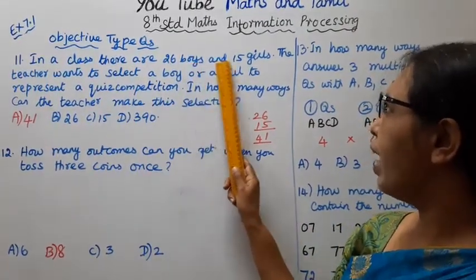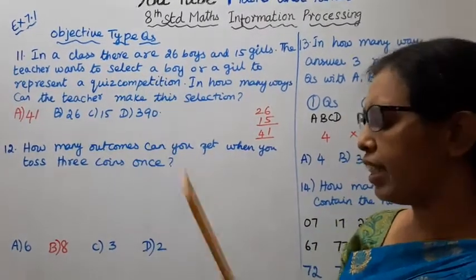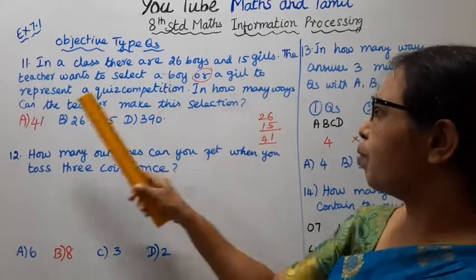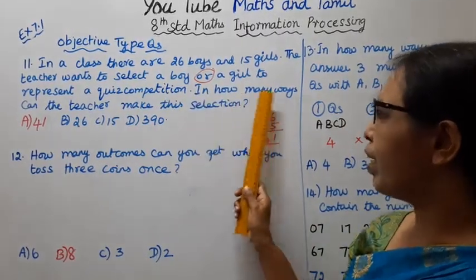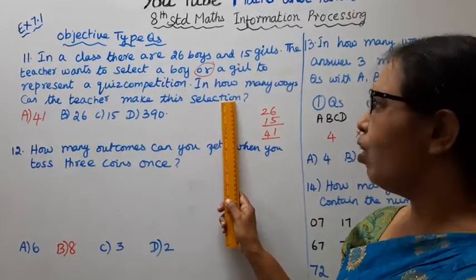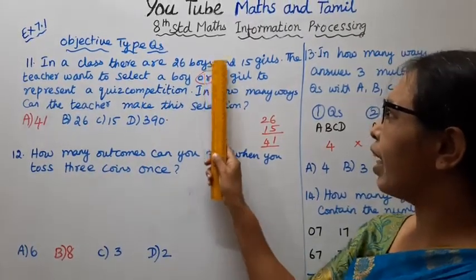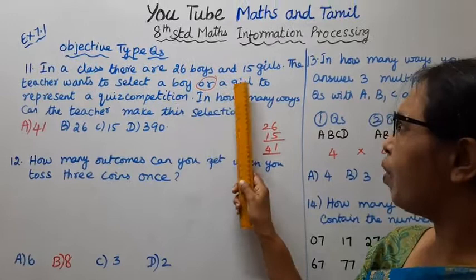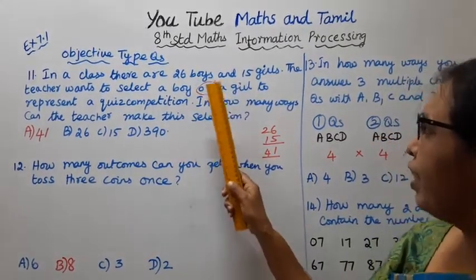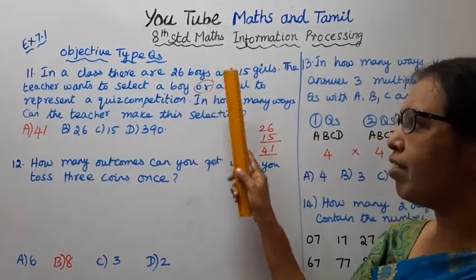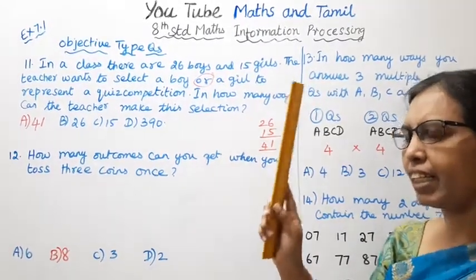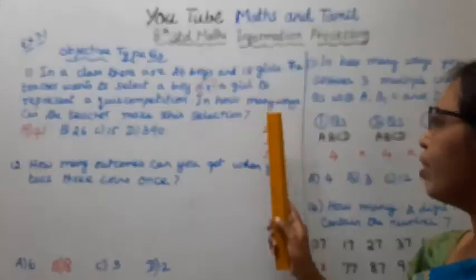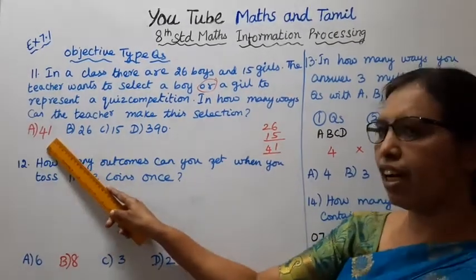Question 11: In a class there are 26 boys and 15 girls. The teacher wants to select a boy or a girl to represent a quiz competition. In how many ways can the teacher make this selection? Since it is a boy or a girl, we add: 26 + 15 = 41. The answer is 41.